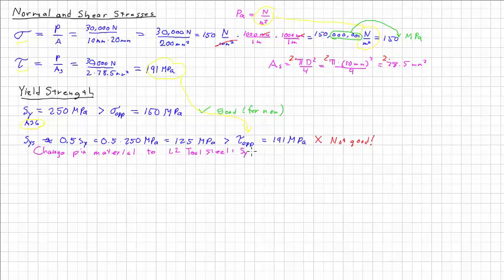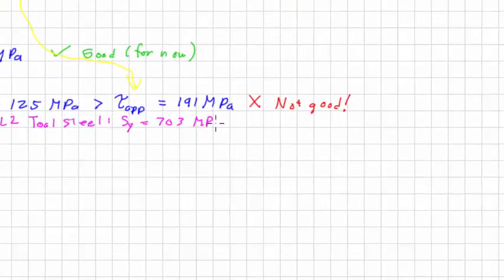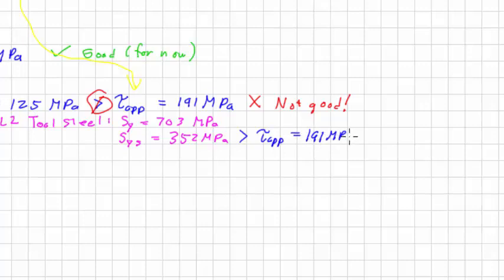Our yield strength is 703 megapascals, which means that our yield strength in shear is half of that, so it would be 352 megapascals. And that means we compare that to the applied, we would hope that it's going to be larger. Our yield strength should be larger than our applied stress. It was 191 megapascals. And there we go. And it does check out. This is true. 352 megapascals is larger than 191. And so that's good for now.